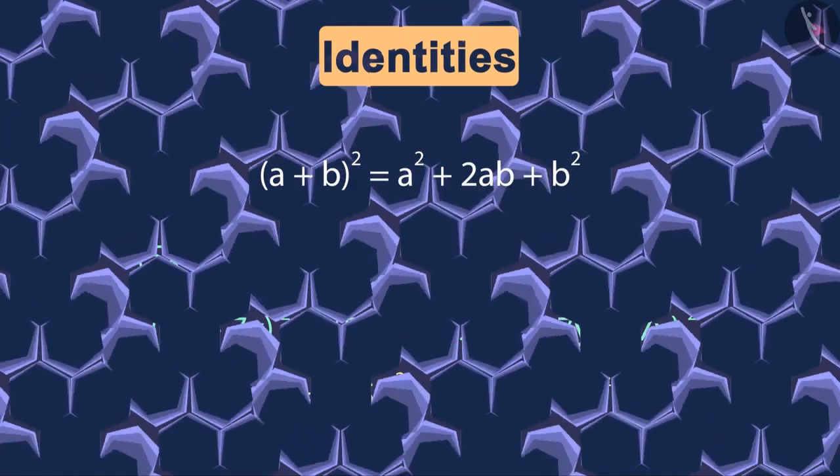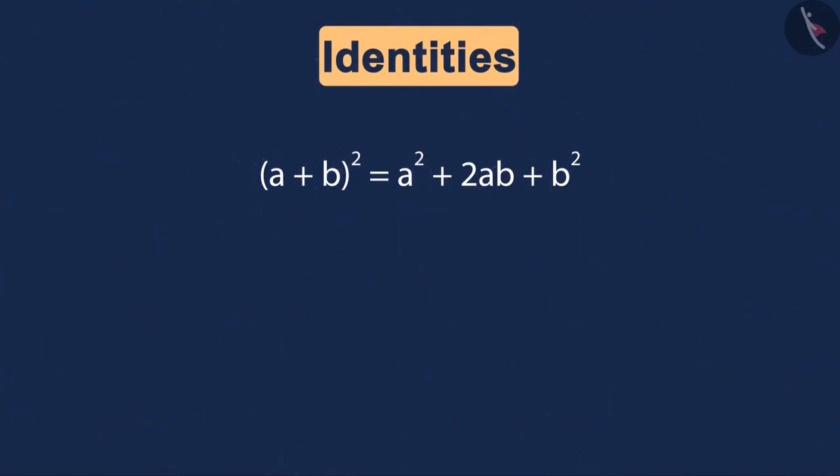Let's see one last example. Can you find the value of (3xy + z)²? You are absolutely right, once again we'll apply this identity, but what shall we write in the place of a and b? Here we can consider a as 3xy and b as z.